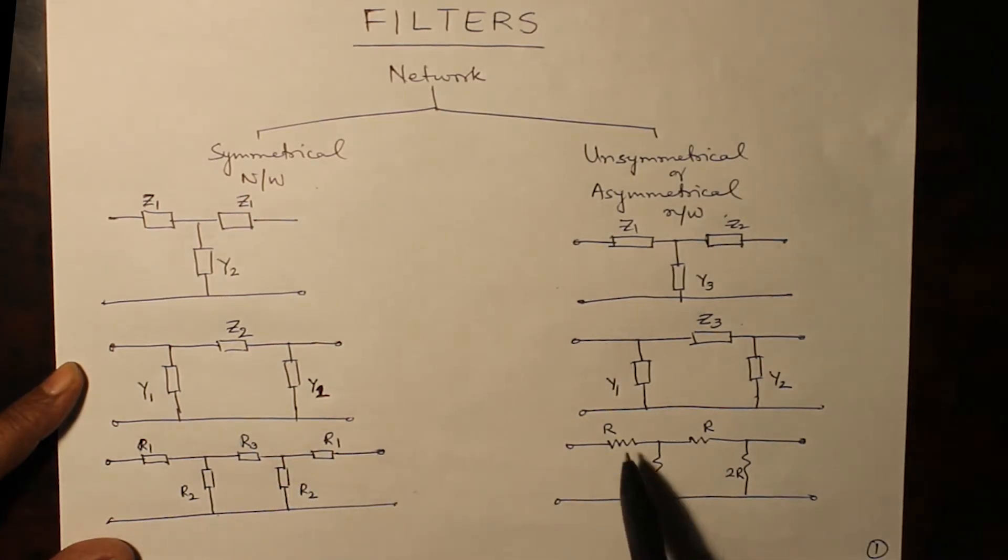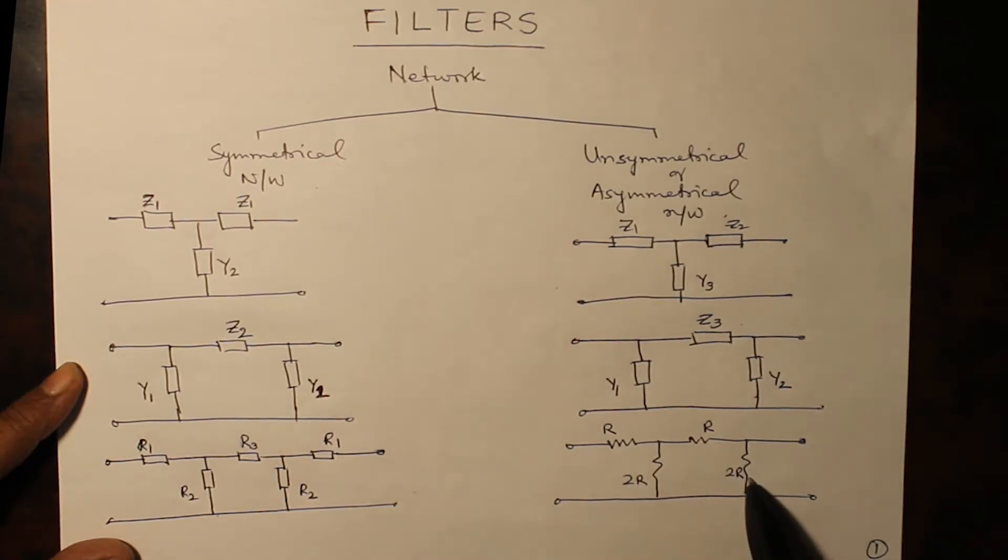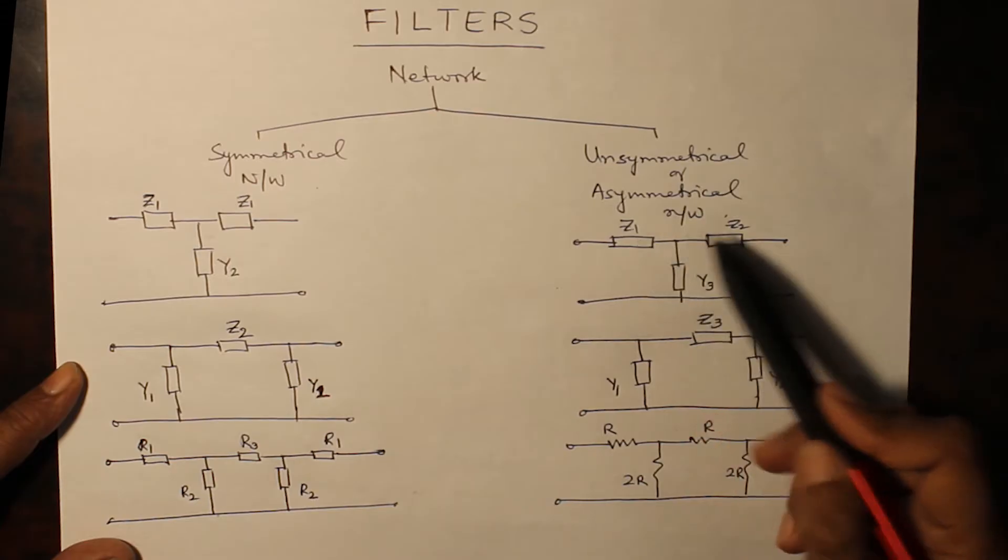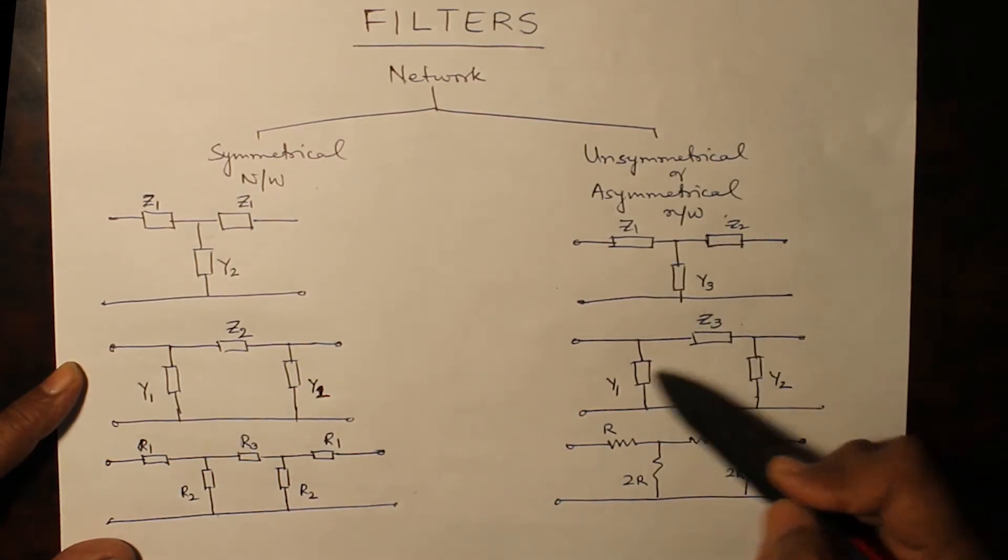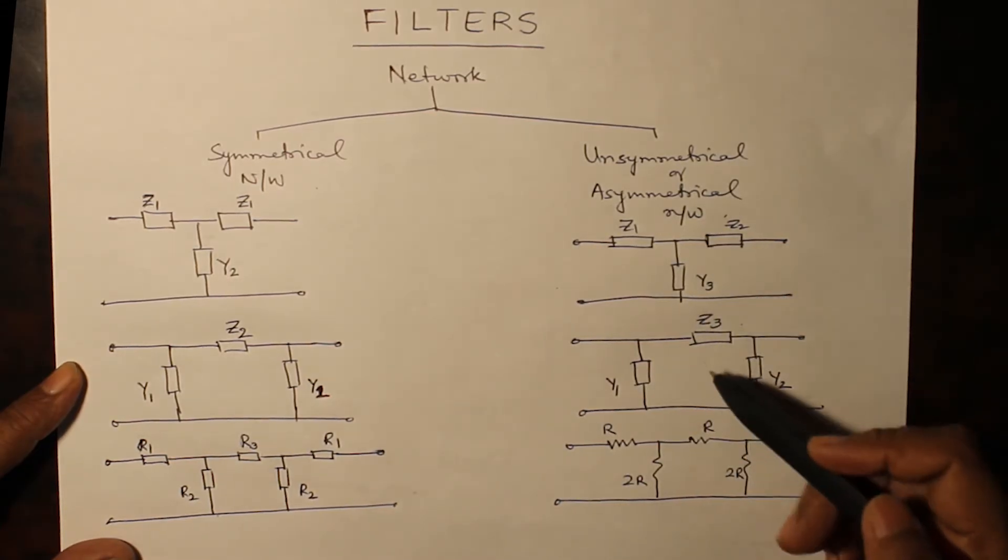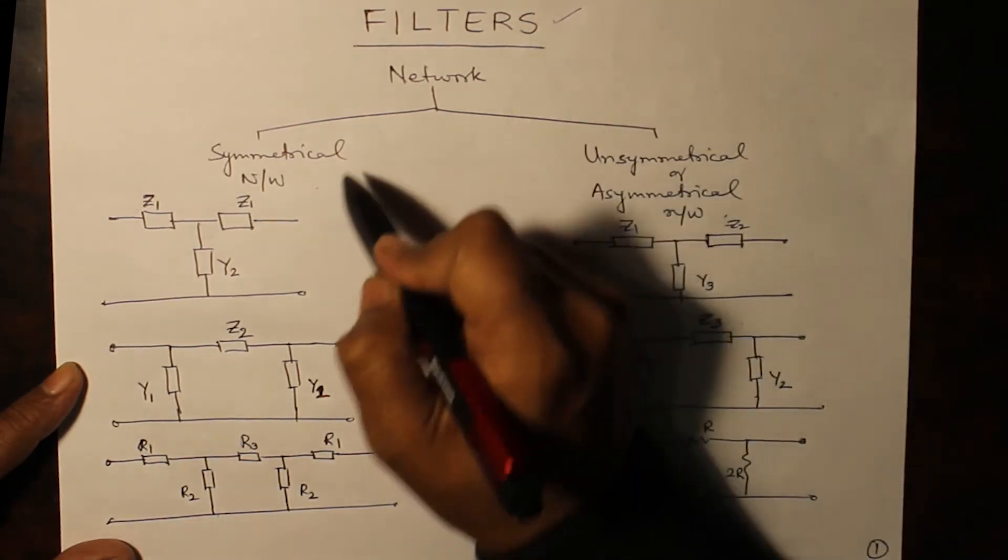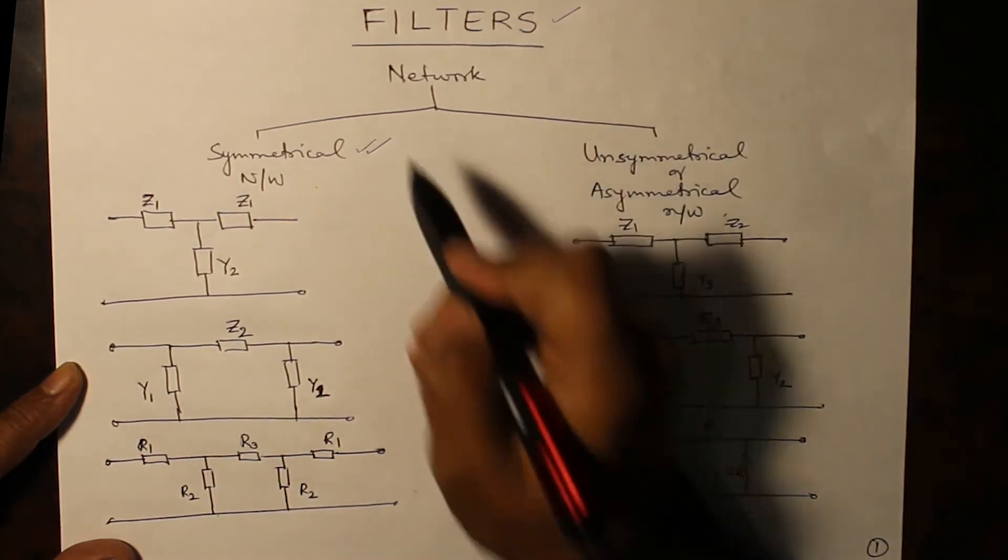Otherwise, a ladder network, R2R ladder which has been shown here is an unsymmetrical network. Similarly, when the values are different, then they are unsymmetrical networks. In filters, we shall be concentrating only on the symmetrical networks.